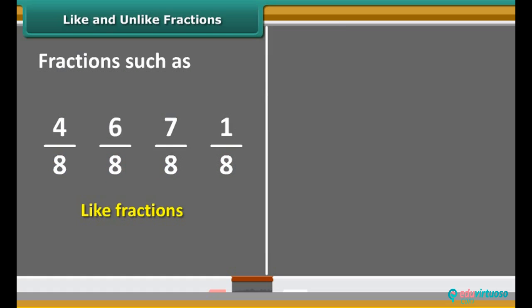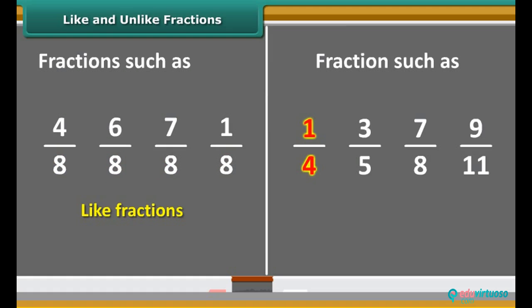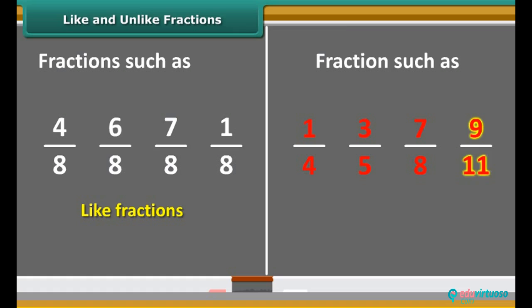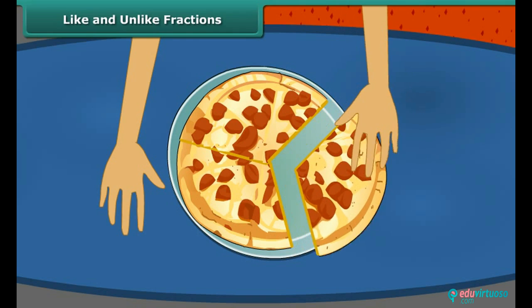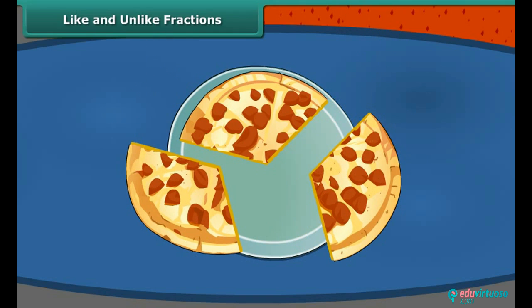Fractions such as 4 upon 8, 6 upon 8, 7 upon 8, and 1 upon 8 with the same denominator are called like fractions. Fractions such as 1 upon 4, 3 upon 5, 7 upon 8, and 9 upon 11 with different denominators are called unlike fractions. Looking at the question we earlier asked, we can say that each of them — Rahul, Rima, and Nina — received one third part of the pizza. Notice that this is also an example of like fractions.